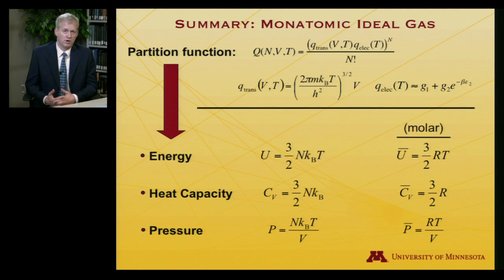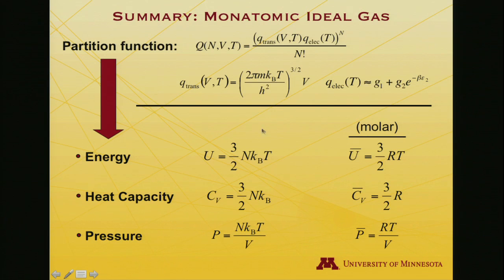If we work in molar units, which are often more convenient when thinking about real macroscopic quantities, molar units implies that we're going to use Avogadro's number for N. In that case, the molar indicated by the bar over the top of the thermodynamic quantity, molar internal energy is 3/2 RT, molar constant volume heat capacity is 3/2 R, and here's the ideal gas equation of state written in a somewhat unusual way with a bar over the P instead of over the V. I think we'll just leave that as a blooper for this particular Coursera course, but you know the bar should go over the V, not the P—that is, pressure equals RT divided by the molar volume.